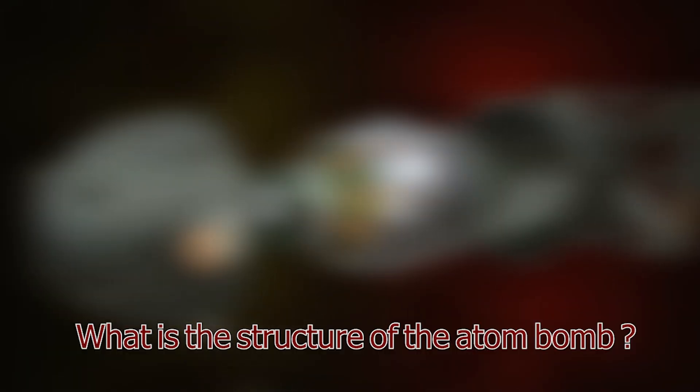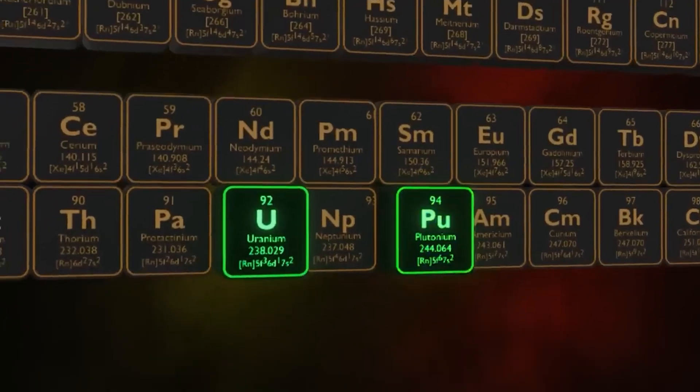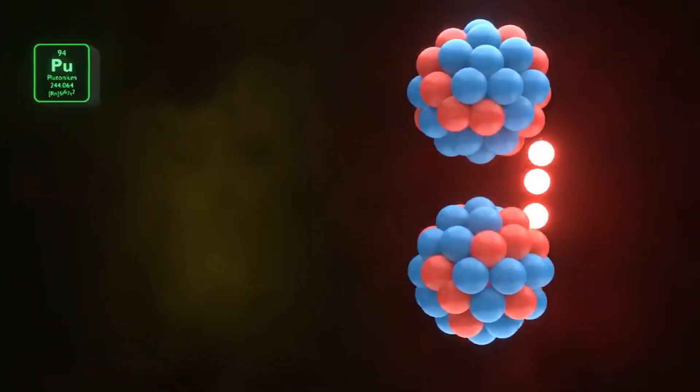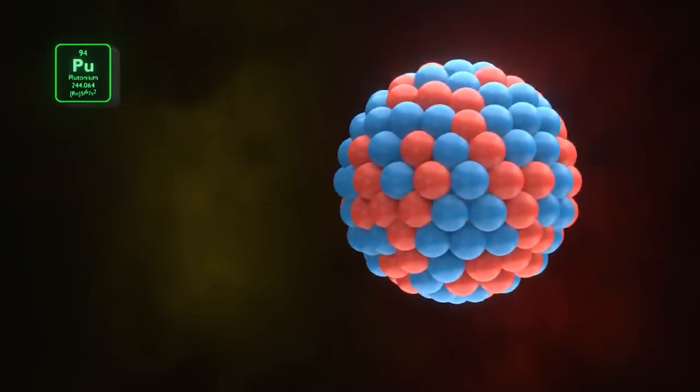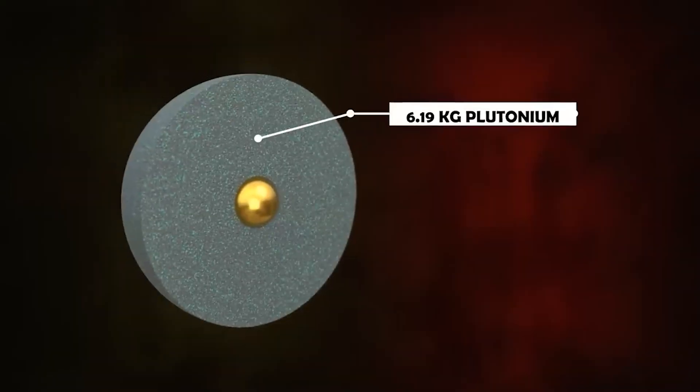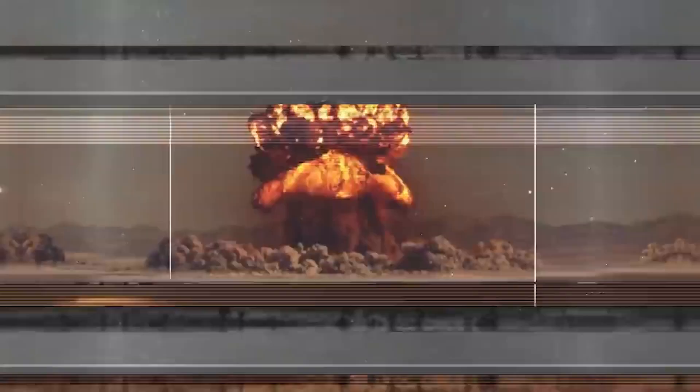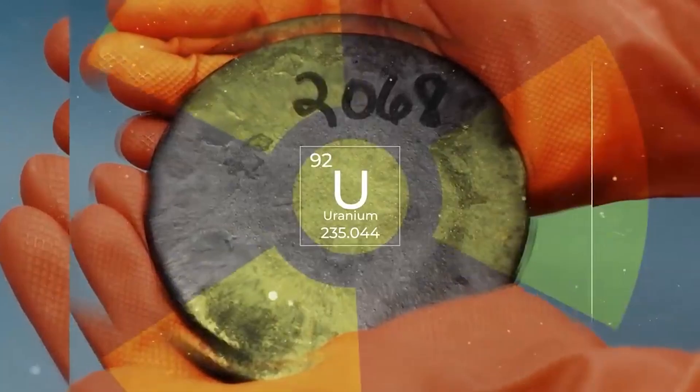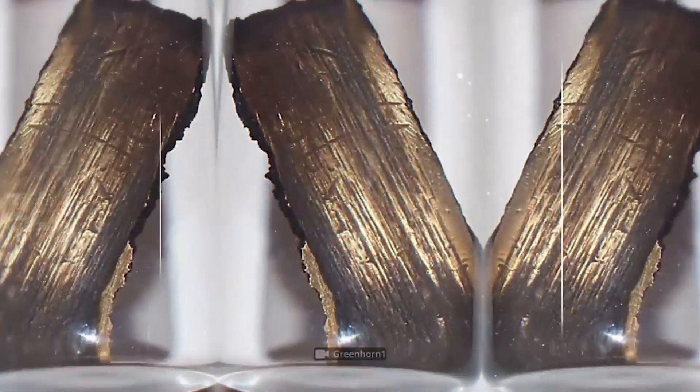What is the structure of an atom bomb? Normally, two elements, uranium and plutonium, are used to make atomic bombs. The nuclear fission reaction is carried out in many isotopes of uranium, but this reaction is not easily done in uranium-235. It emits more neutrons in the process of each fission reaction than other isotopes of uranium. Plutonium-239 acts similarly to uranium-235.